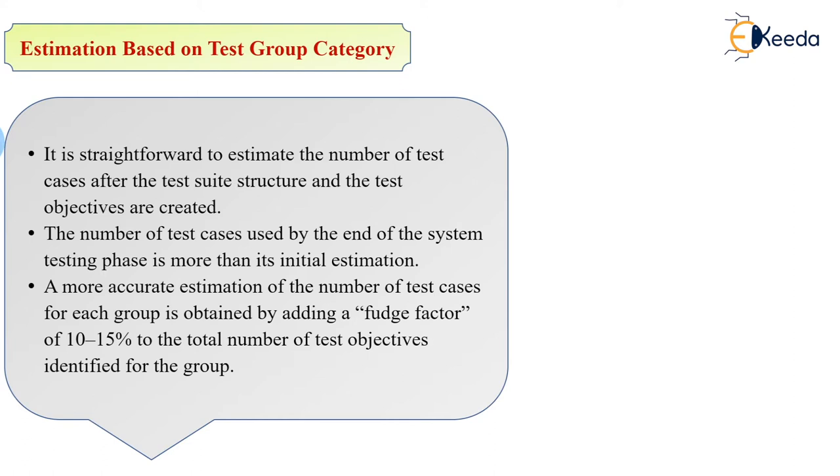We estimate the number of test cases, suite structure, and test objectives that are created. The number of test cases used by the end of system testing is more than the initial estimation. A more accurate estimation is obtained by adding a fudge factor of 10-15% to the total number of test objectives identified for each group.